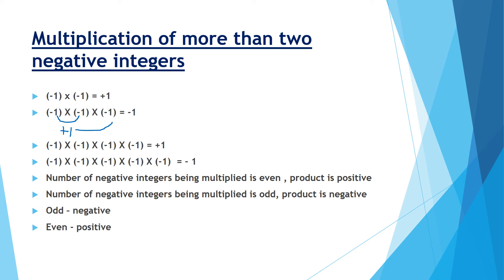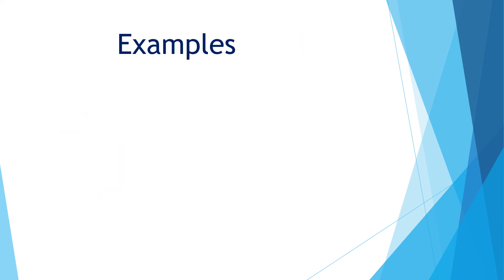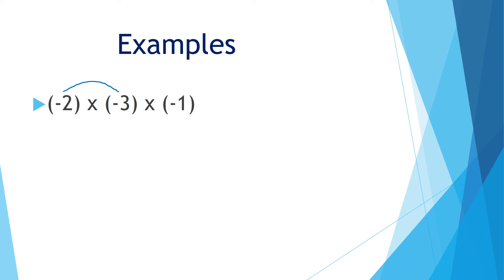Once again: odd means negative and even means positive. Now let's see some examples. Minus 2 into minus 3 into minus 1. Here the number of negative integers is 3 — which is odd — so directly we can say the sign will be negative. Then we multiply the numbers: 2 threes are 6, then 6 ones are 6. So minus 2 into minus 3 into minus 1 is minus 6.